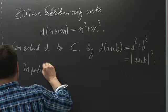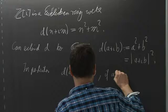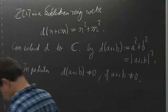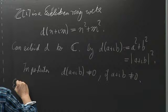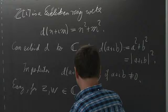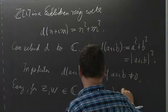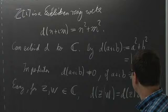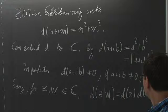In particular, d(a + ib) is nonzero if a + ib is not zero. It is well known and easy to check that for z and w in C, d(z times w) equals d(z) times d(w) — you can check this from the formula for the product of complex numbers.